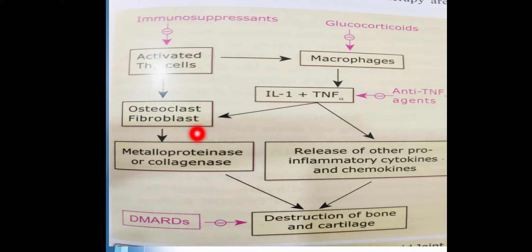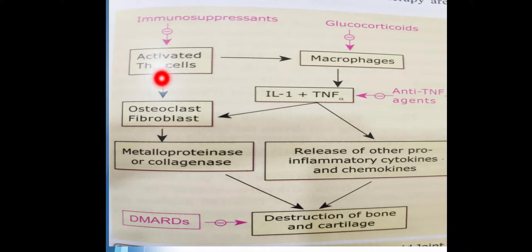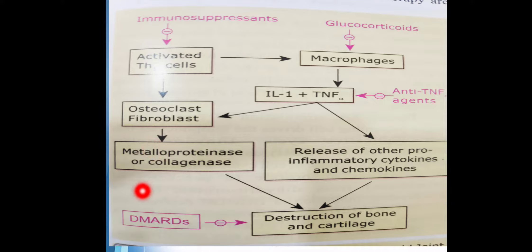Osteoclasts stimulate metalloproteinases and collagenases, causing further destruction of bone and cartilage. Our treatment targets are: immunosuppressants like cyclosporine and azathioprine suppress TH cells; adjuvant drugs like steroids inhibit macrophages; anti-TNF agents inhibit TNF-alpha; and all DMARDs ultimately inhibit or prevent destruction of bone and cartilage.